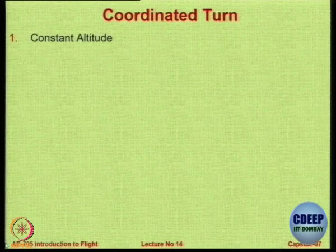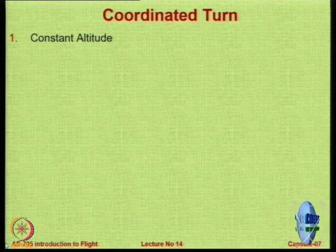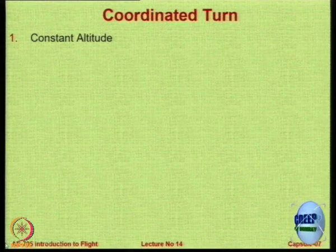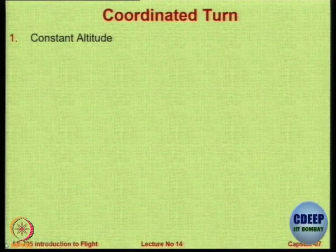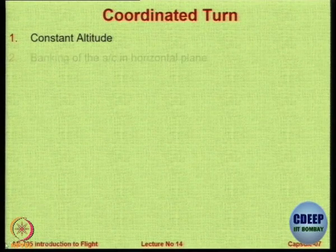So what is the coordinated turn? In a coordinated turn — this is basically a level coordinated turn in the horizontal plane — the altitude remains constant. The aircraft banks in a horizontal plane at some angle, and that angle also remains constant during the turn. There is no acceleration either sideways or vertically to cause what is called skidding or drift.